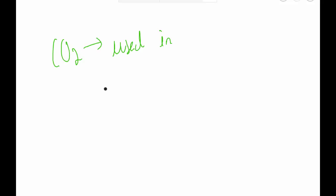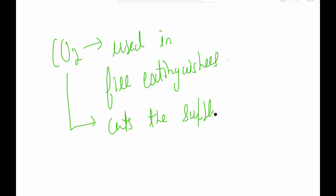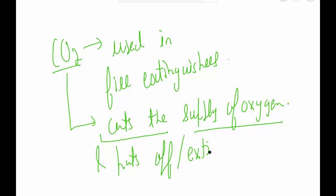What carbon dioxide does is it cuts the supply of oxygen. Whenever there is fire, it is due to combustion in the presence of oxygen. So what carbon dioxide does is it cuts the supply of oxygen, hence puts off or extinguishes the fire.